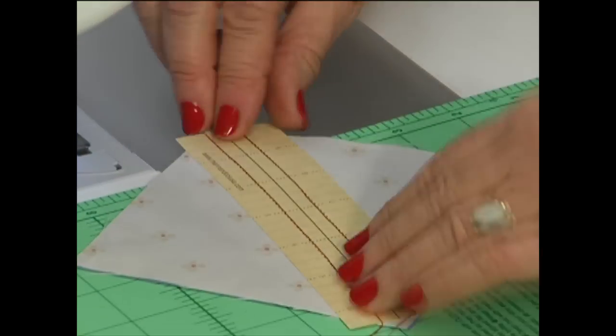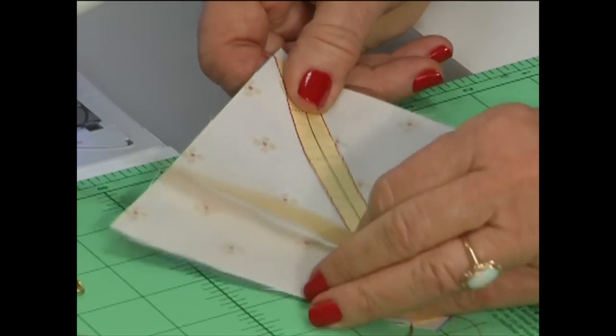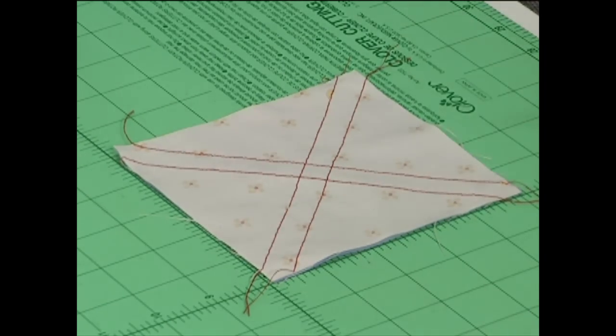To remove the paper, fold the lines on the stitching and just peel that paper away, and then the last is that center strip, and repeat on the second side.